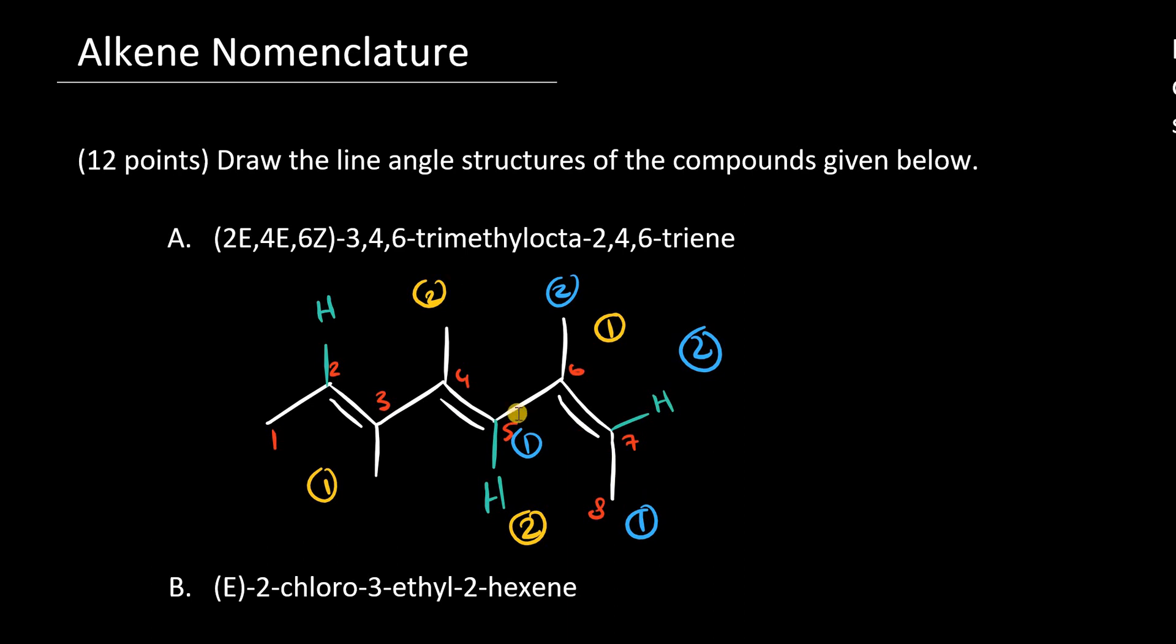And there we have it. We have the highest priority groups, the number 1s, cis to one another, and the lowest priority groups, cis. So, that satisfies 6Z.